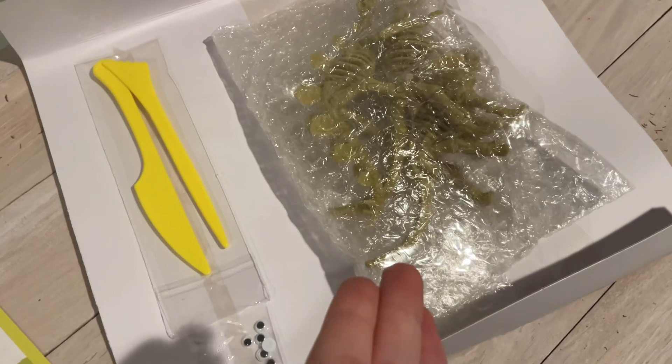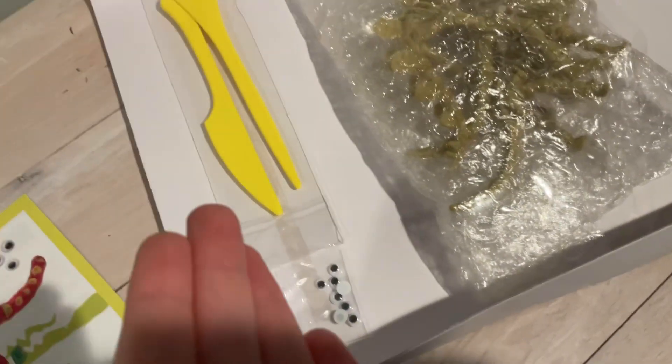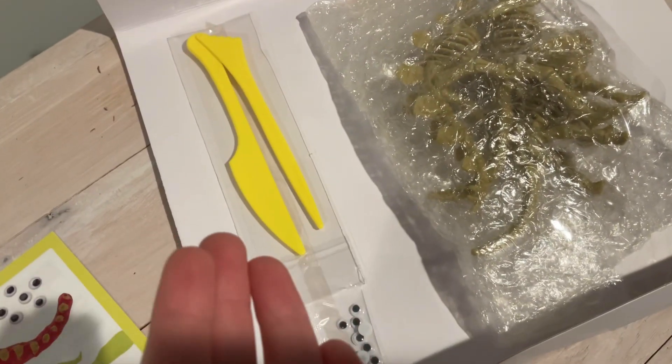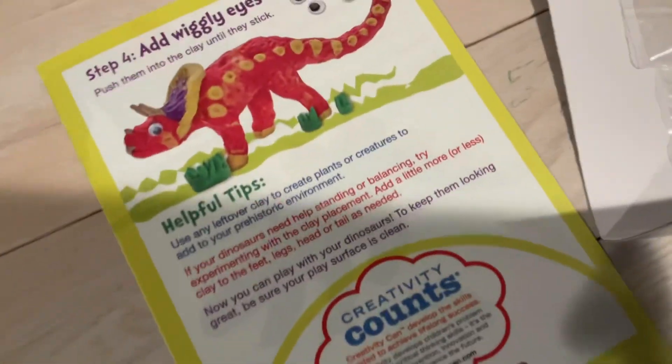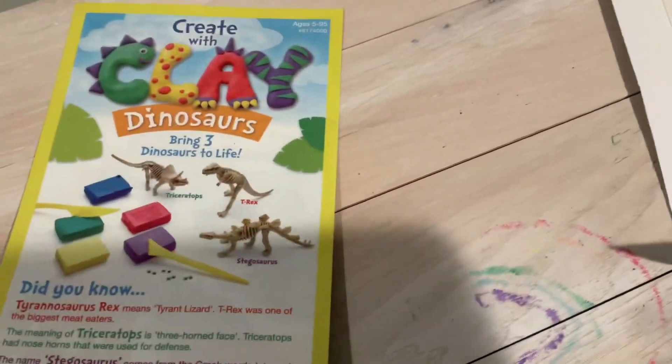So here we have dinosaur skeletons, googly eyes, some materials to make texture on the dinosaurs, a little guide, and clay.